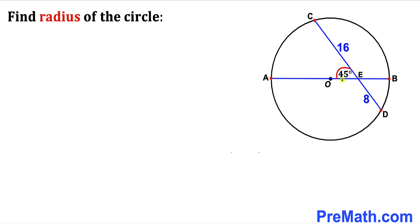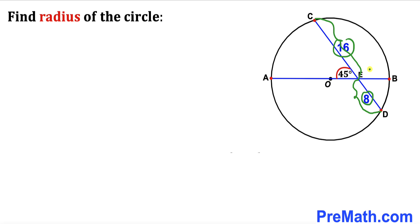In this video we have got a circle with center O such that diameter AB and chord CD intersect each other at angle 45 degrees. Furthermore, segment CE is 16 and segment ED is 8 units. Our task is to find the radius of this circle.